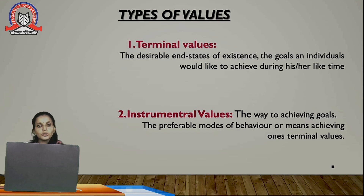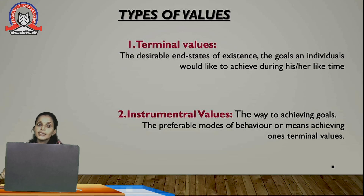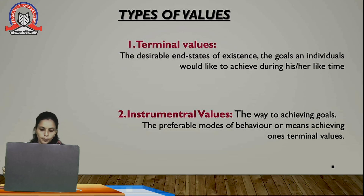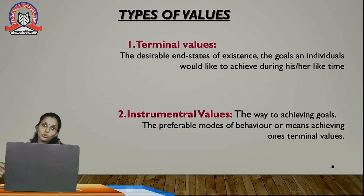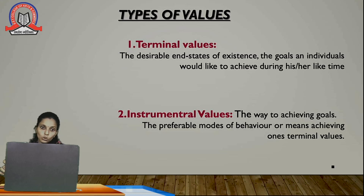Now we are going to discuss the types of values. Generally, values are divided into two types: the first is terminal values and the second is instrumental values. Terminal values refer to the desirable end states of existence — the goals an individual would like to achieve during his or her lifetime. It means the person has a target they want to achieve within a certain time period, and that is known as a terminal value.